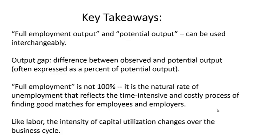Key takeaways from this video: Full employment output and potential output can be used interchangeably. The output gap is the difference between observed and potential output, often expressed as a percent of potential output. Full employment is never 100% — the natural rate of unemployment reflects the time-intensive and costly process of matching employees and employers. And like labor, the intensity of capital utilization also changes over the business cycle.